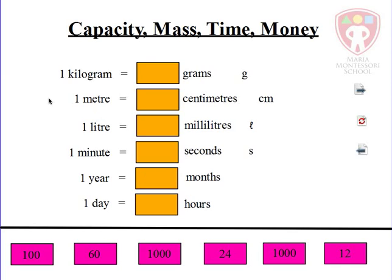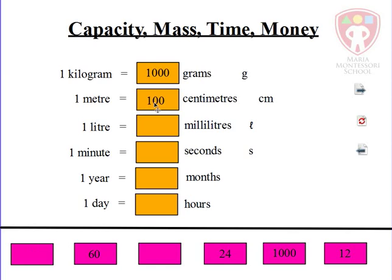We know that 'kilo' means thousand, so one kilogram is a thousand grams. One meter is 100 centimeters, because 'centi' means 100.